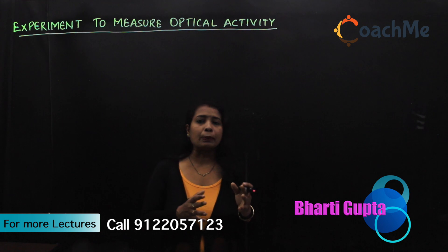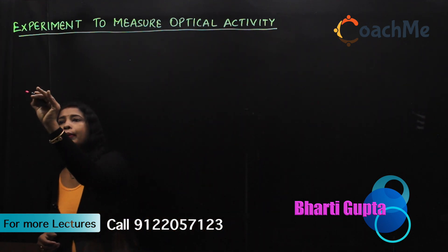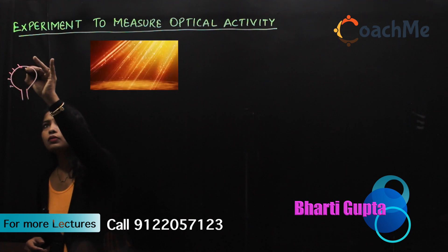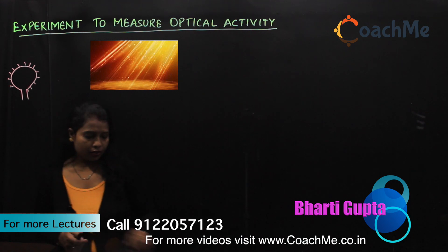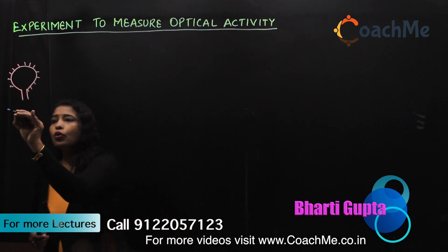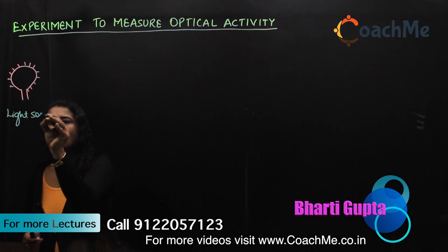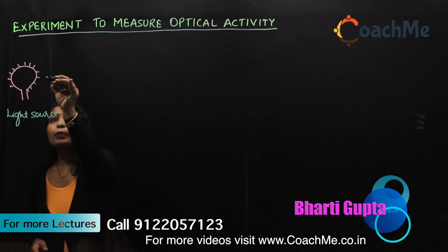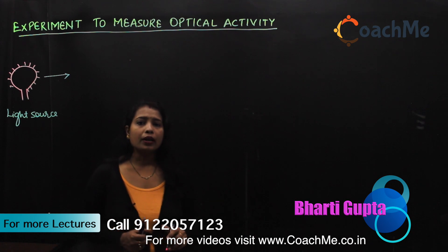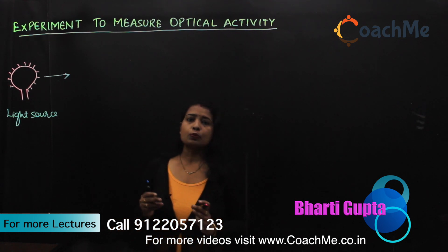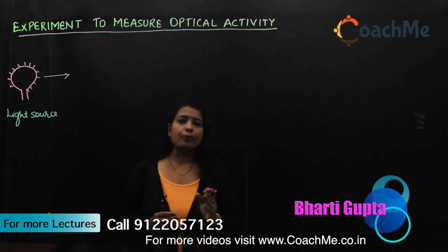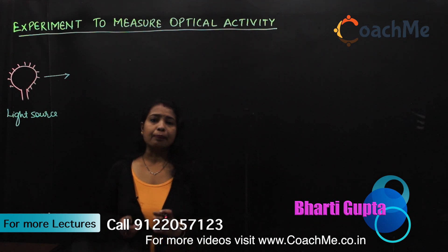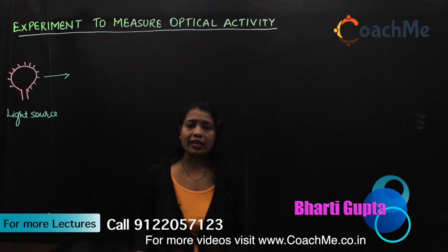We are going to do an experiment with light to see whether the compound is optically active or inactive. So the first important requirement is we need a light source. The light which comes from a normal light source is polychromatic, meaning it contains light particles of different wavelengths. Chroma is related to color, so light containing particles of so many colors and wavelengths is called polychromatic light.